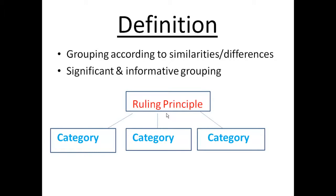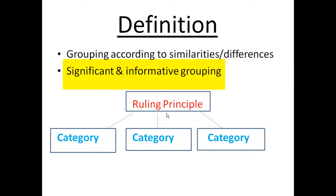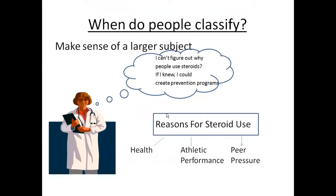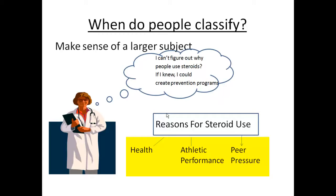The definition of classification is grouping according to similarities or differences. You need to have significant and informative groups. The ruling principle is the unifying idea or point of view in the act of classifying. For example, in this case the ruling principle is reasons for steroid use, broken down into three types: health, athletic performance, and peer pressure.